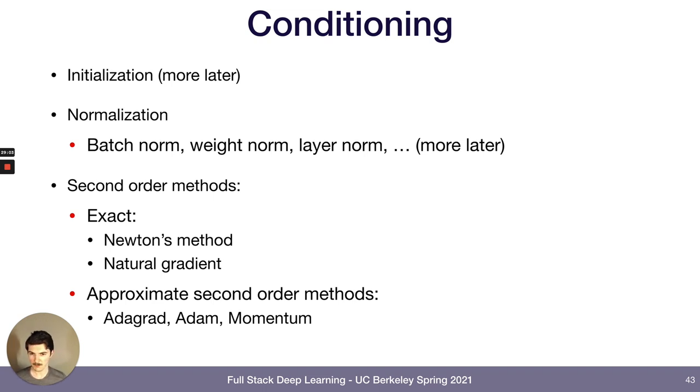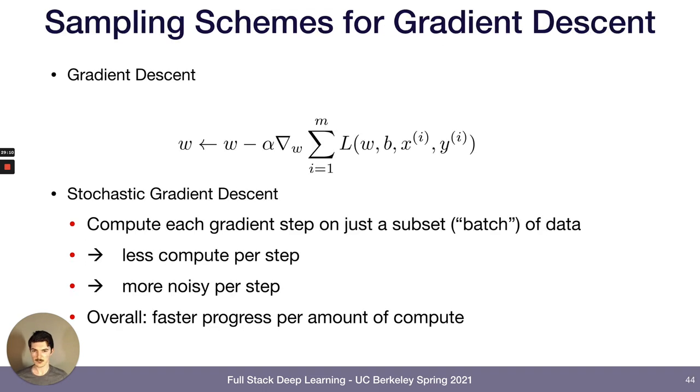But there are some approximate second order methods that can play a role in training neural networks more quickly. And if you just remember the name Adam, that would be the optimizer we're going to use in the labs. And that's what it's trying to do, approximate second order.